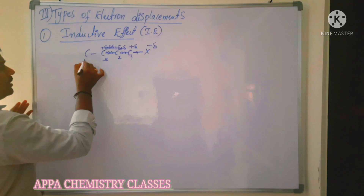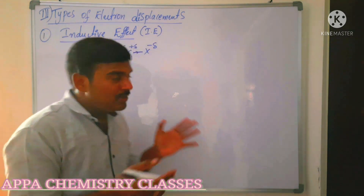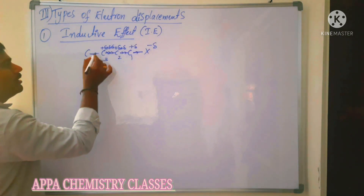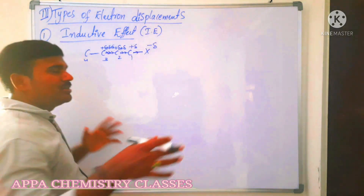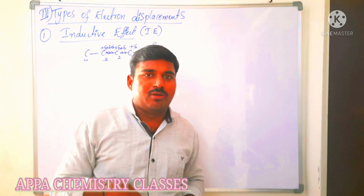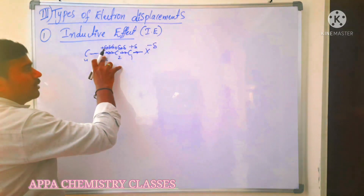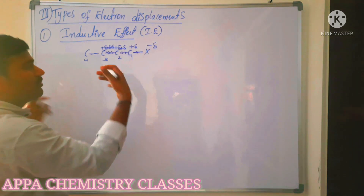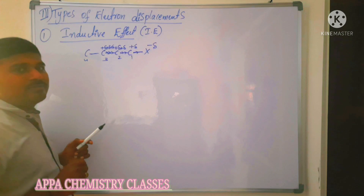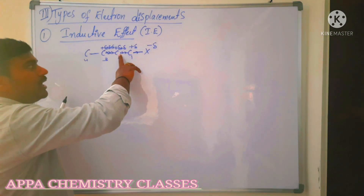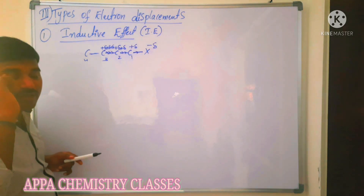The inductive effect is distance-dependent. Generally, it disappears after the third carbon — the ability to attract electrons decreases beyond the third carbon from the electronegative atom. The first carbon has the most positive charge since it is directly bonded to the electronegative atom. No attacking reagent is needed; this displacement happens through the covalent bond and is called the inductive effect.